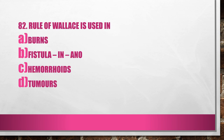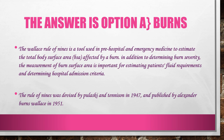Question No. 82. Rule of Valet is used in: A. Burns, B. Fistulae, C. Hemorrhoids, D. Tumour. The Valet's Rule of Nine is a tool used in pre-hospital and emergency medicine to estimate the total body surface area (BSA) affected by a burn, important for estimating fluid requirements and determining hospital admission criteria. The Rule of Nines was devised by Pulaski and Tennyson in 1947 and published by Alexander Valets in 1951. Answer is Option A, Burns.